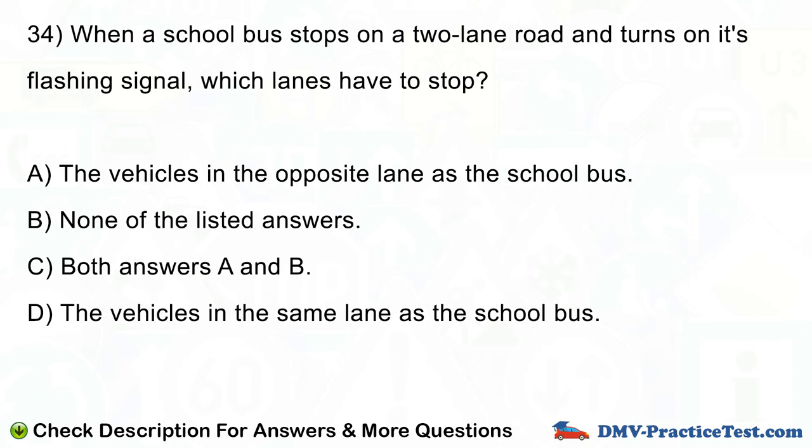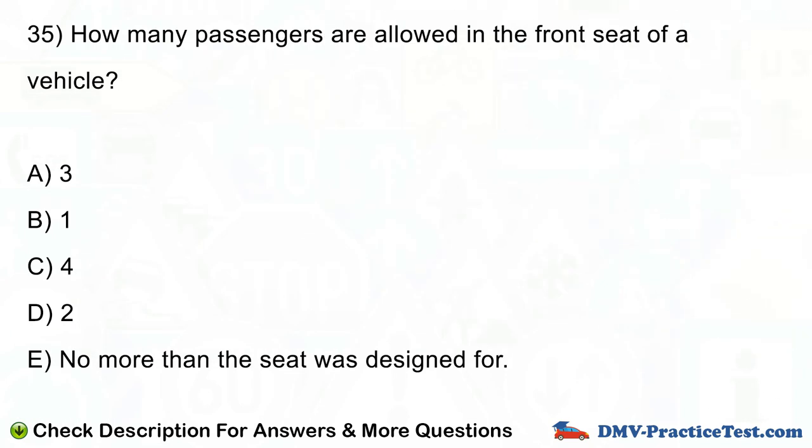Question number 35. How many passengers are allowed in the front seat of a vehicle? A. 3. B. 1. C. 4. D. 2. E. No more than the seat was designed for.